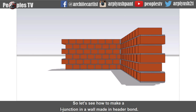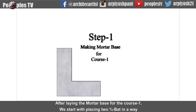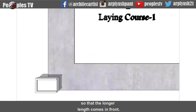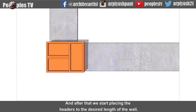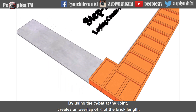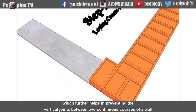Let's see how to make an L junction in a wall made in header bond. After laying the mortar base for course 1, we start by placing two 3/4 bats so that the longer length comes in front. After that, we start placing the headers to the desired length of the wall. Using the 3/4 bat at the joint creates an overlap of 1/4 of the brick length, which helps prevent vertical joints between two continuous courses of the wall.